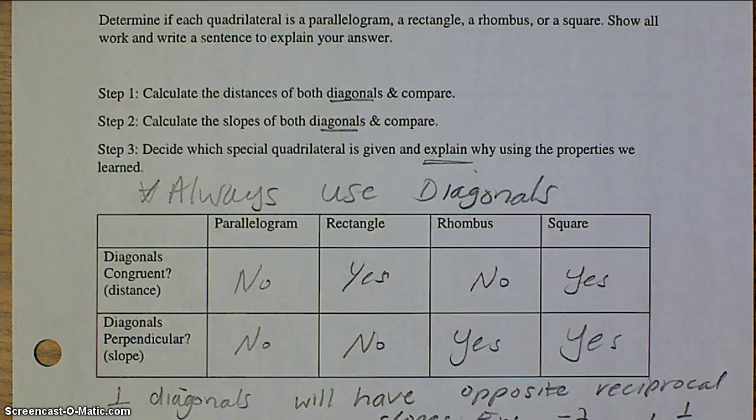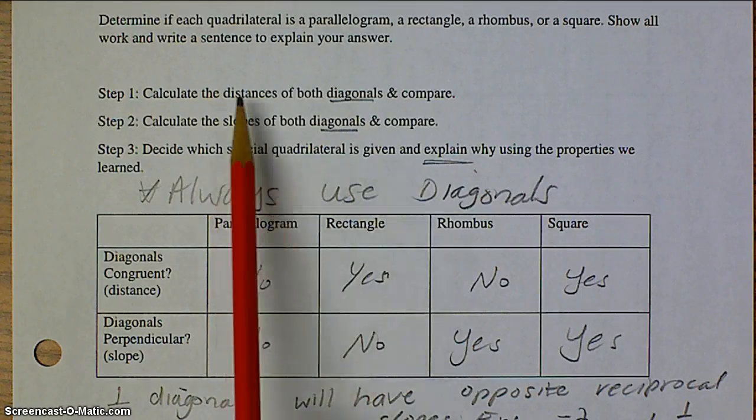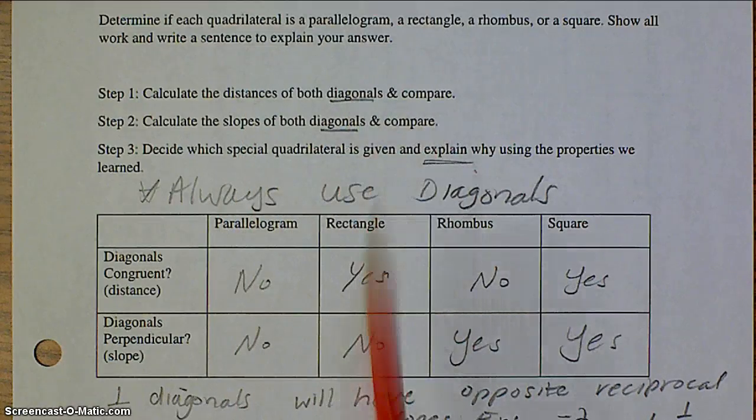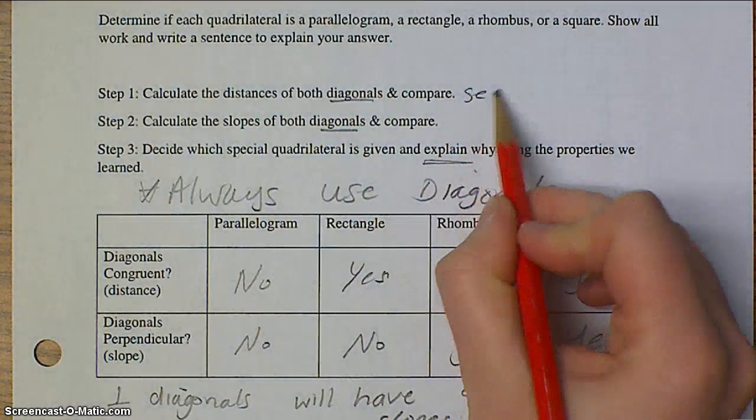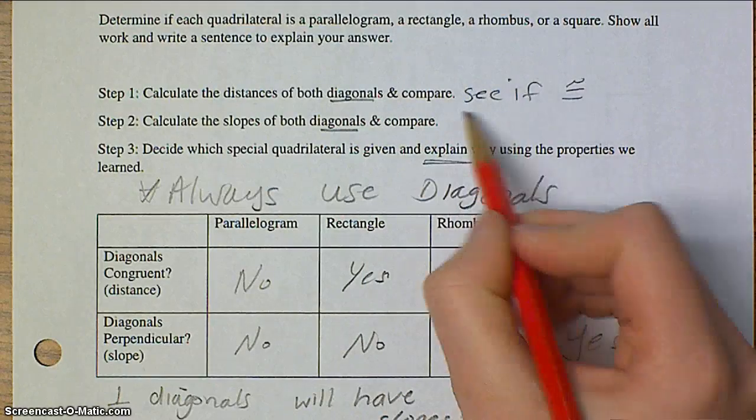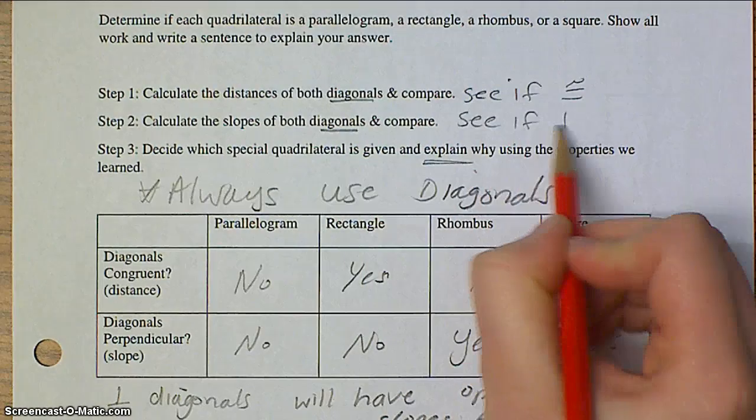There's three main steps that you're always going to follow. First, calculate the distances of the diagonals and compare to see if they're congruent. Step two, calculate the slopes of the diagonals to see if they are perpendicular.